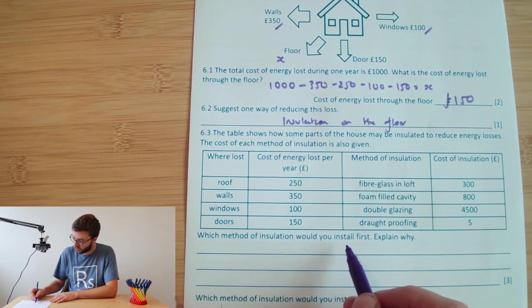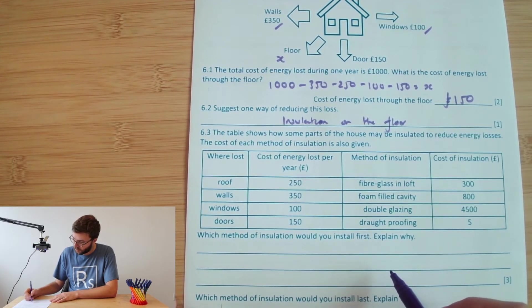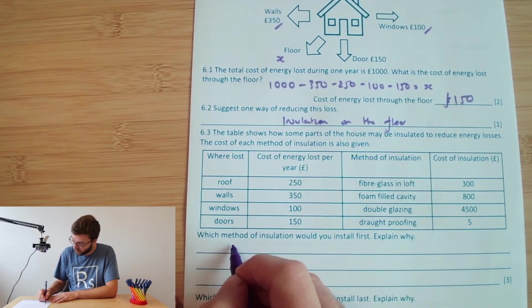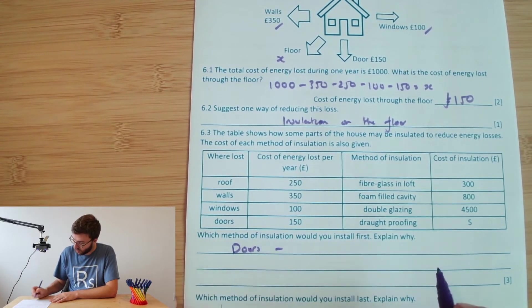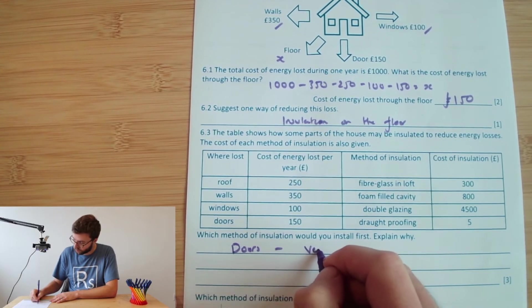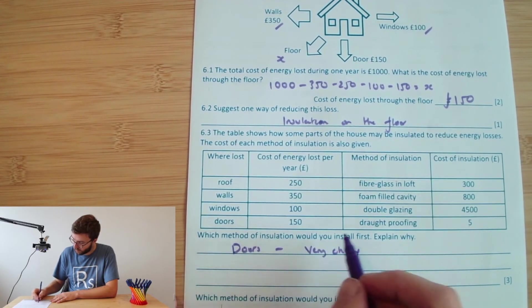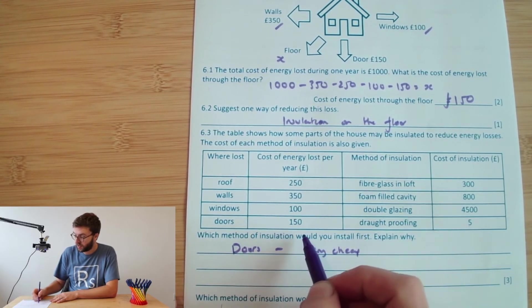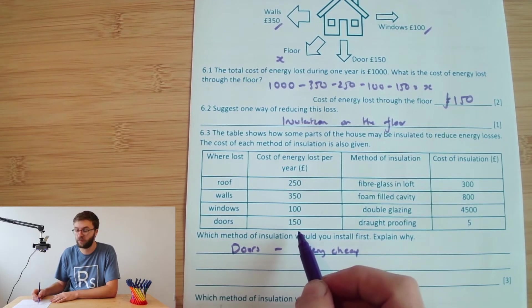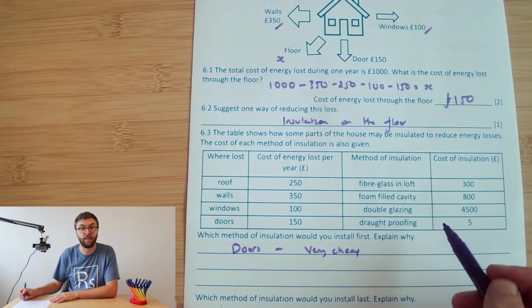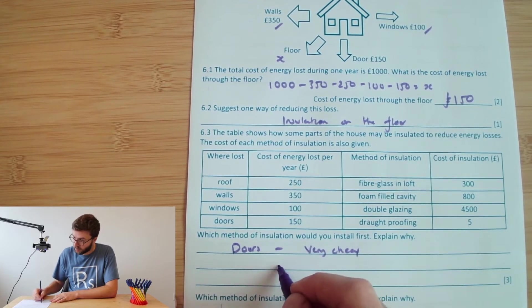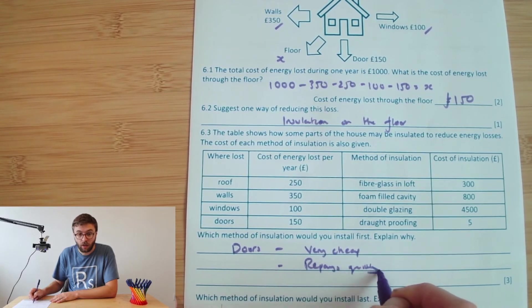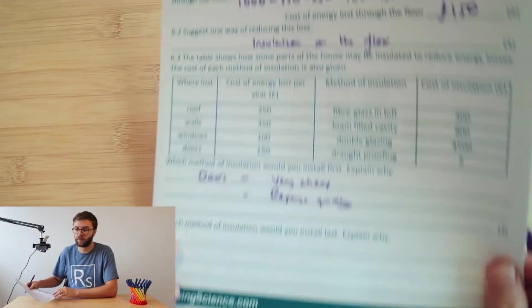So which method of insulation would I install first and explain why? So when I'm looking at which ones I install first, there's probably a couple of answers that you could give. But the one that jumps out to me is the doors and the reason why it's very cheap. And therefore proportionally, you're going to get a lot of your money back. You're going to spend five pounds and then in the first year, it's going to save you 150 pounds. So it's saving you many times over what you've actually spent. So I could say that it repays quickly.